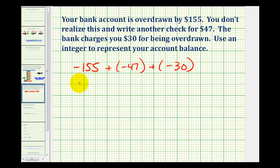So whether we know how to add negative integers or not, we should be able to figure this out using logic. You can think of all of these as losses or amounts that you have to pay. So what we could do is find the sum of 155, 47, and 30. And because they're all amounts that we owe, we could represent this with a negative integer.